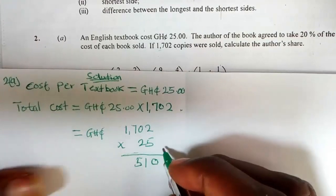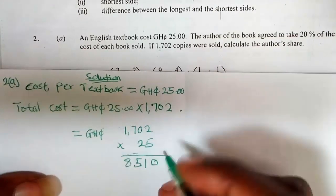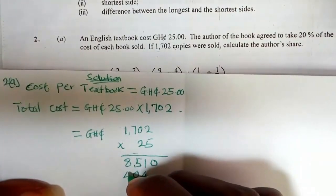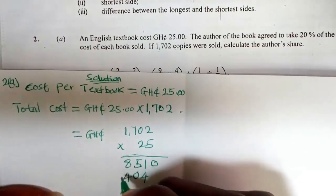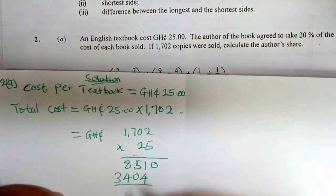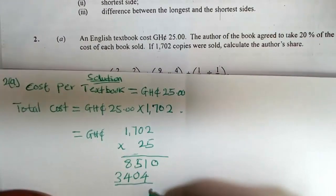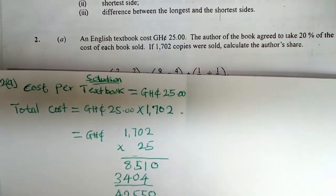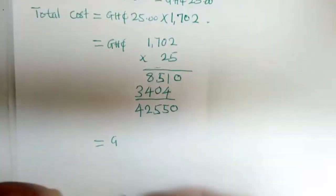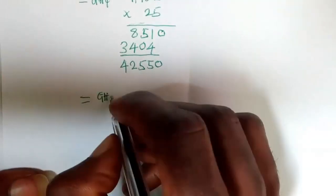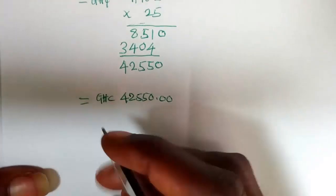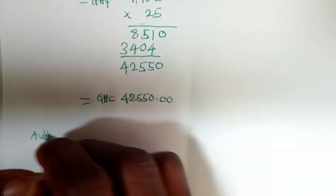Working through the multiplication: 1,702 times 25. Five times 1,702, plus 20 times 1,702. This gives us a total cost of 42,550 cedis. The total cost is 42,550 cedis.